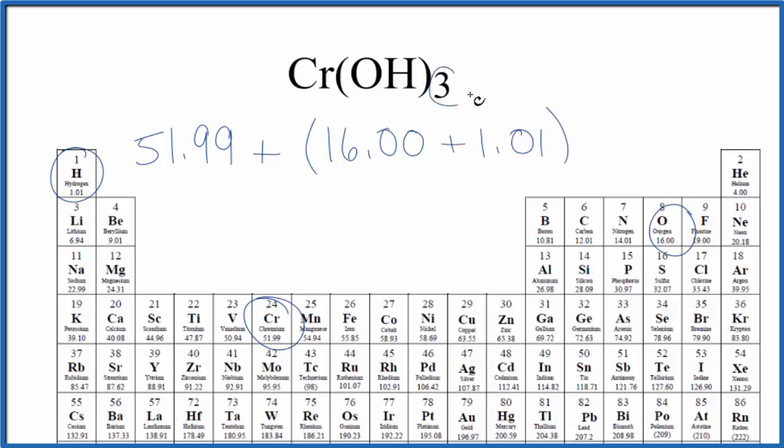We have three of these hydroxides, this OH here, so three hydroxide ions. We're just going to put a three outside here, and then we add everything in the parentheses, multiply by three, and then we add to this number.